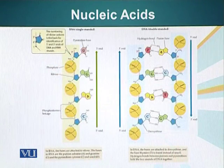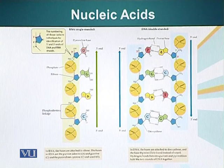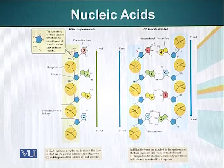Now let's look at some of the chemical properties of these molecules. As I have mentioned in a previous module, these molecules are polymers which are held together by phosphodiester bonds. The important aspect of the polymer is that the two ends of this polymer are different. One end is called the 3' end and the other one is called the 5' end.